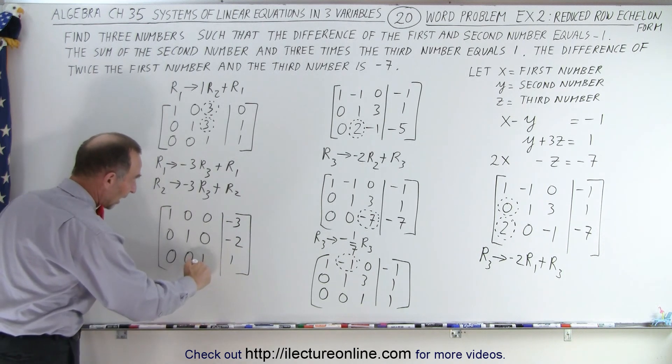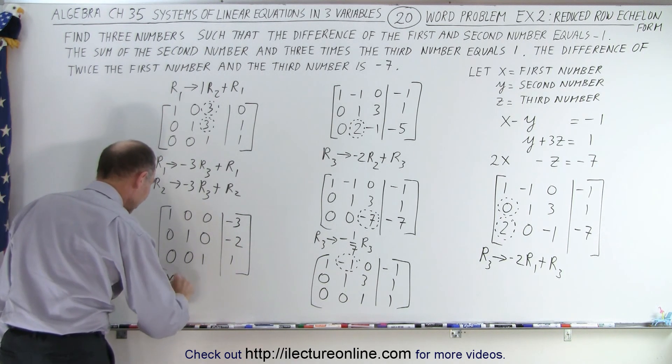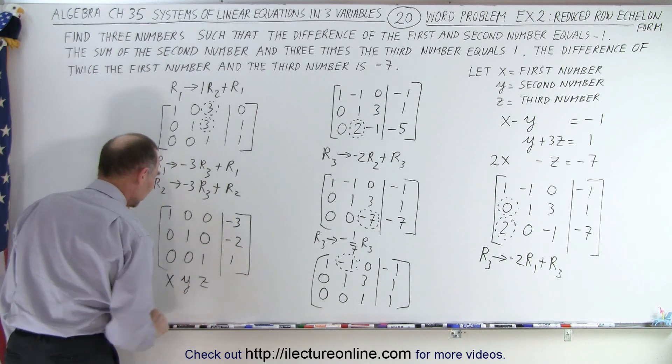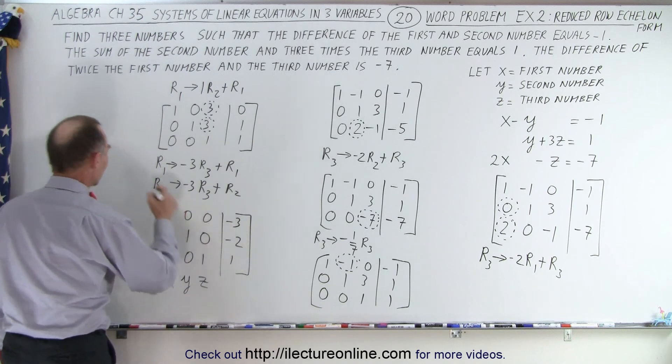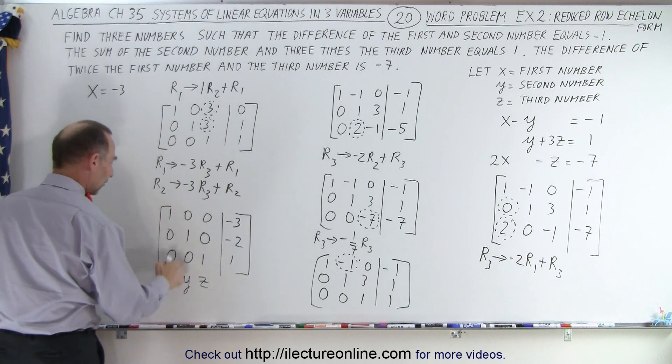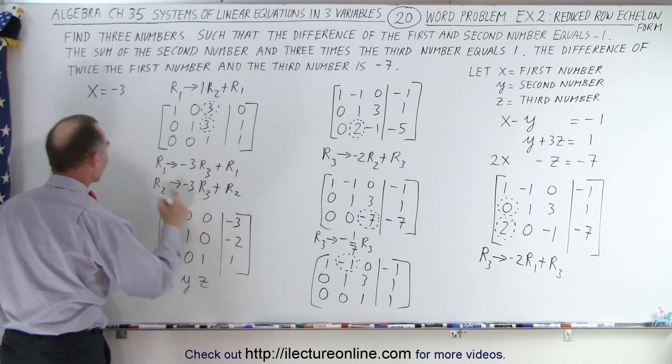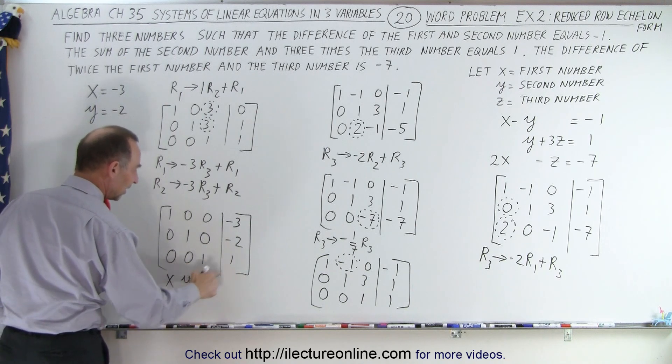And now notice we have ones across diagonal and zeros everywhere else, which means that this is our x, our y, and our z columns. So here we can see that one times x is equal to negative three. We have one times y is negative two. And one times z is equal to one.